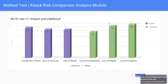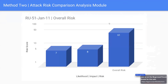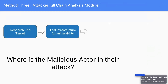Method Two looks at risk: what is the risk of this attack to my organization or my customer's? We break it into two areas — likelihood and impact — and ask several questions in each: complexity of attack, ease of discovery, ease of exploit, and loss of confidentiality, integrity, and availability. We give each question a score between zero and ten, take an average for each area, multiply them together, and get an overall risk score. The higher the number, the higher the risk. Between a malicious actor with a risk of 70 and one of 30, we'd prioritize the one scoring 70.